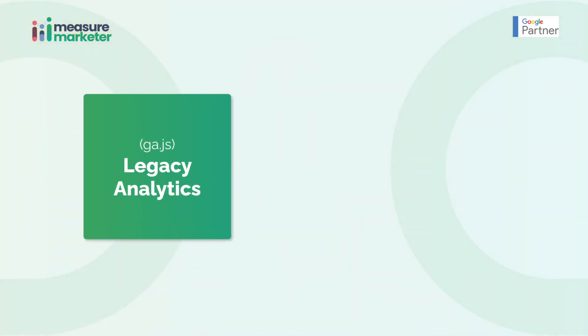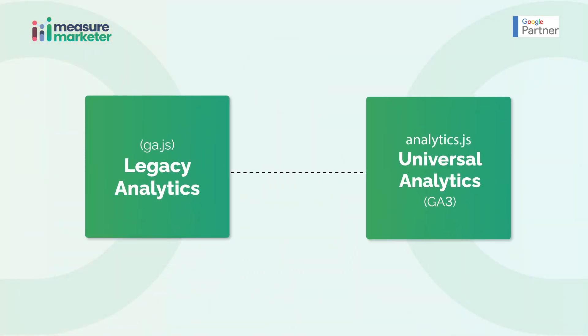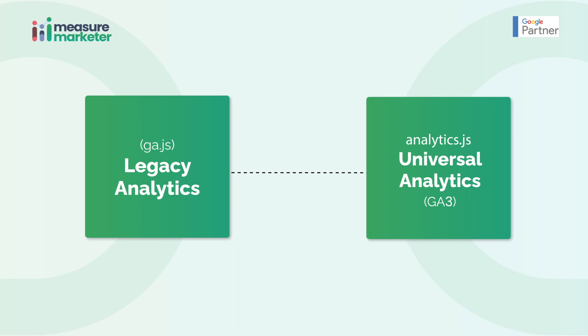Then Google released an update called Universal Analytics, and with that update they changed the library from ga.js to analytics.js. So now the code was a little different from what was used in Classic Analytics. This is the second version — analytics.js.